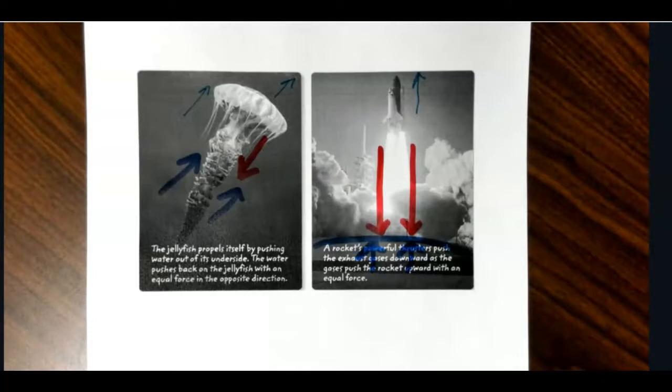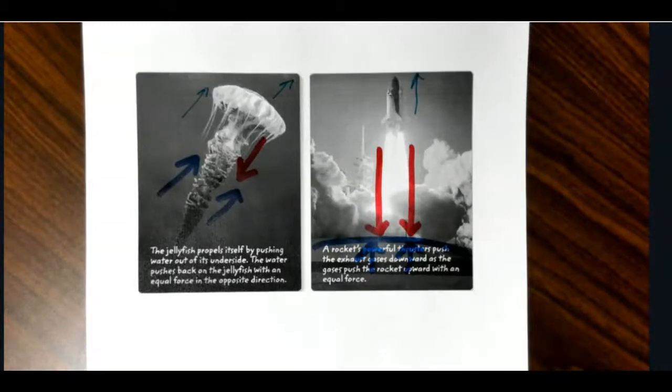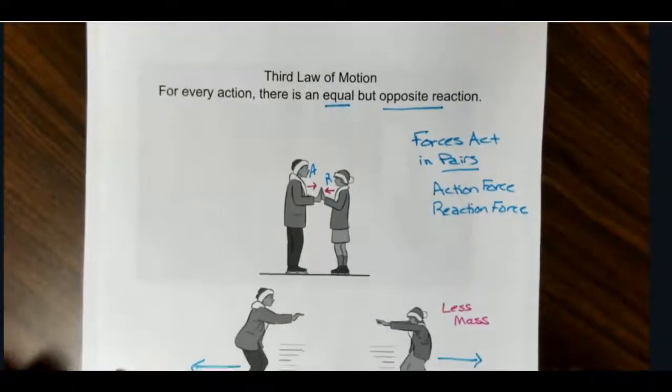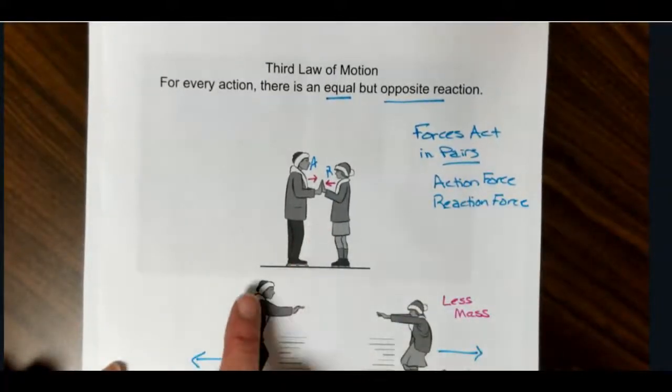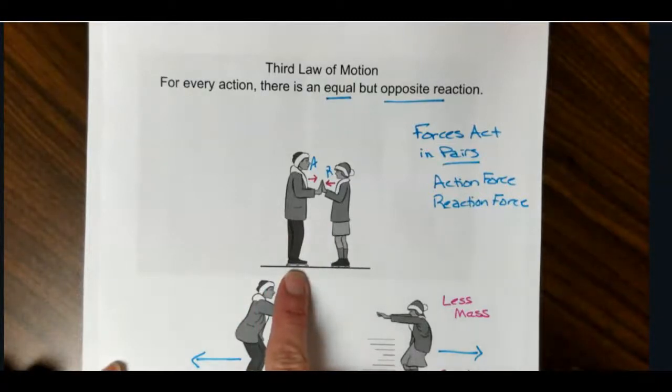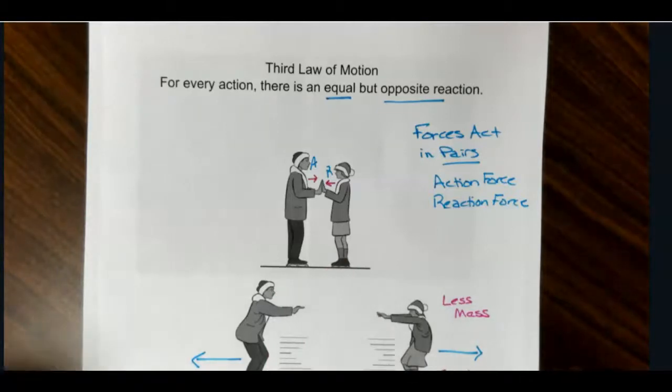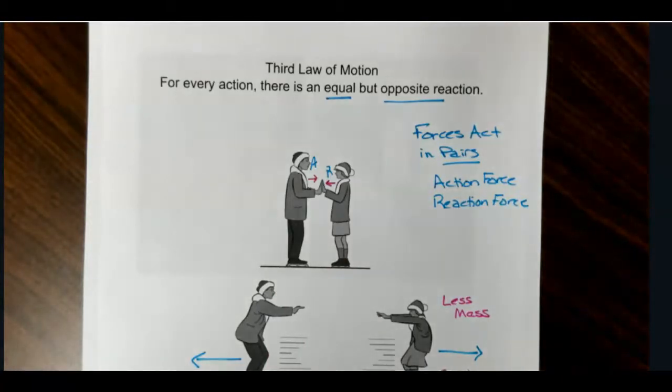So the key with third law is it has to be equal in size and opposite in direction. It has to be a direct relationship. So if we go back to our first scenario, you cannot say that the boy is exerting a force on the ice, and the ice is exerting a force on the girl. That's not equal in size and opposite in direction, so make sure that you're always looking for a direct link between the two.